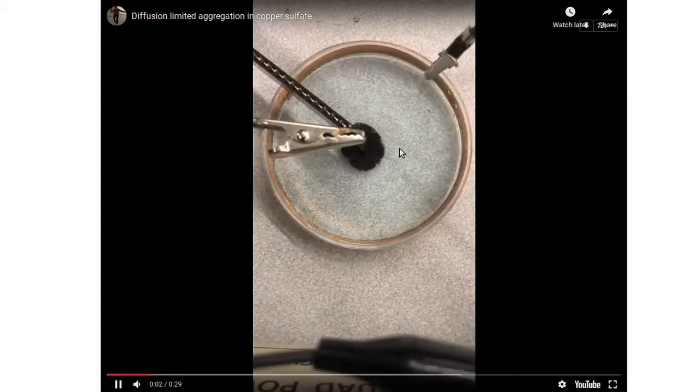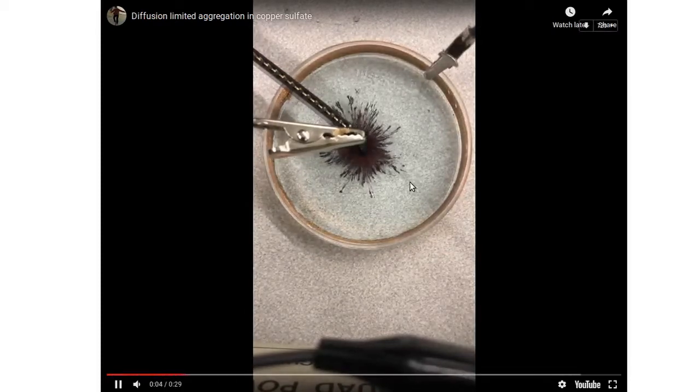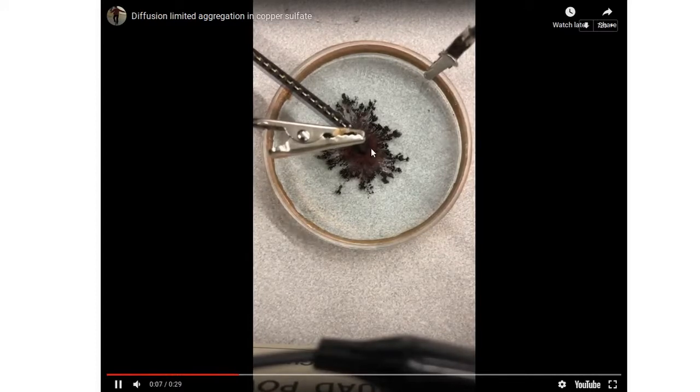Last week we saw that we could put some copper sulfate into a petri dish and grow this kind of crystal structure out of copper.